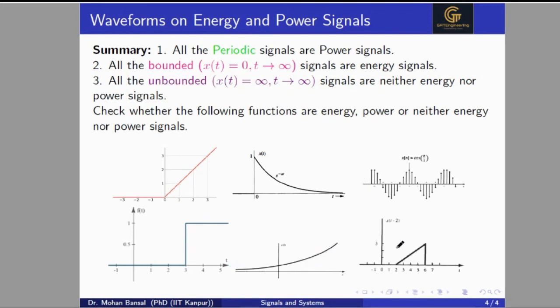The next signal is defined from 2 to 6 — it is a bounded signal, not a periodic signal, and not an unbounded signal. Since it is not periodic, it is not a power signal. This signal is defined for finite value with finite time duration, so this signal is bounded and is an energy signal. Thank you for watching this video.